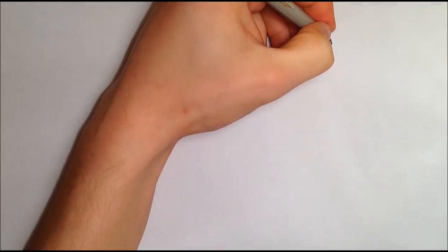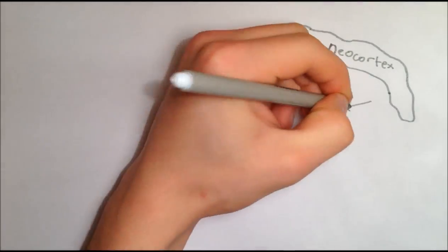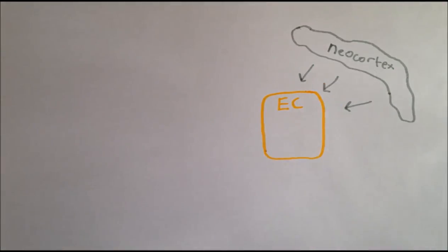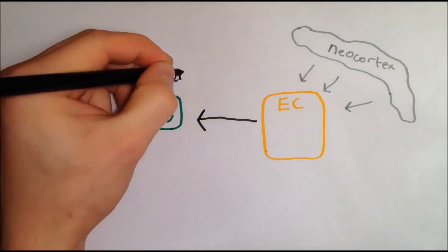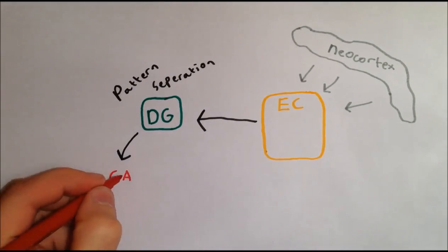So now we've seen how a memory consists of patterns of neocortical activation, which can be condensed and sent to the entorhinal cortex, undergo pattern separation and then be bound together or indexed in the CA3 auto-associator.